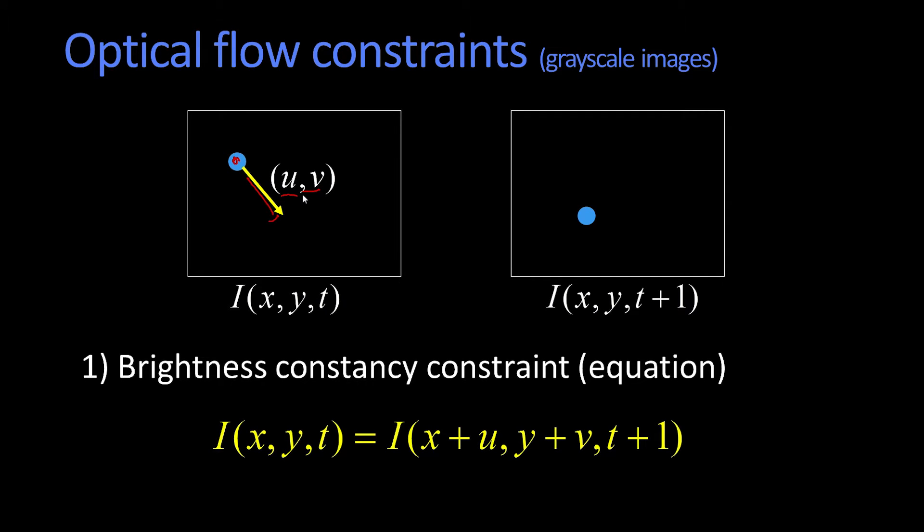The brightness constancy equation can be written like this. I of x, y, t, that is the image at time t at location x, y. Brightness if it's grayscale, color if it's color. Is going to be the same at t plus 1 at location x plus u, y plus v.